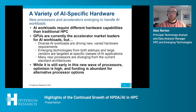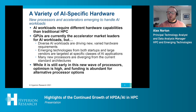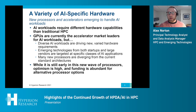Another area we've been tracking is the variety of AI-specific hardware coming out. AI workloads are increasingly diverse with new methodologies and application spaces. Although GPUs are currently the market leaders for accelerators in AI systems, they're not necessarily the only option moving forward. Both startups and large vendors are building custom processors and new accelerator technologies to handle specific classes of AI applications, whether it's natural language processing or image recognition. These processors are starting to find their niche, targeting specific users and use cases, with a lot of optimism, abundant funding, and excitement around what this hardware variety can provide.